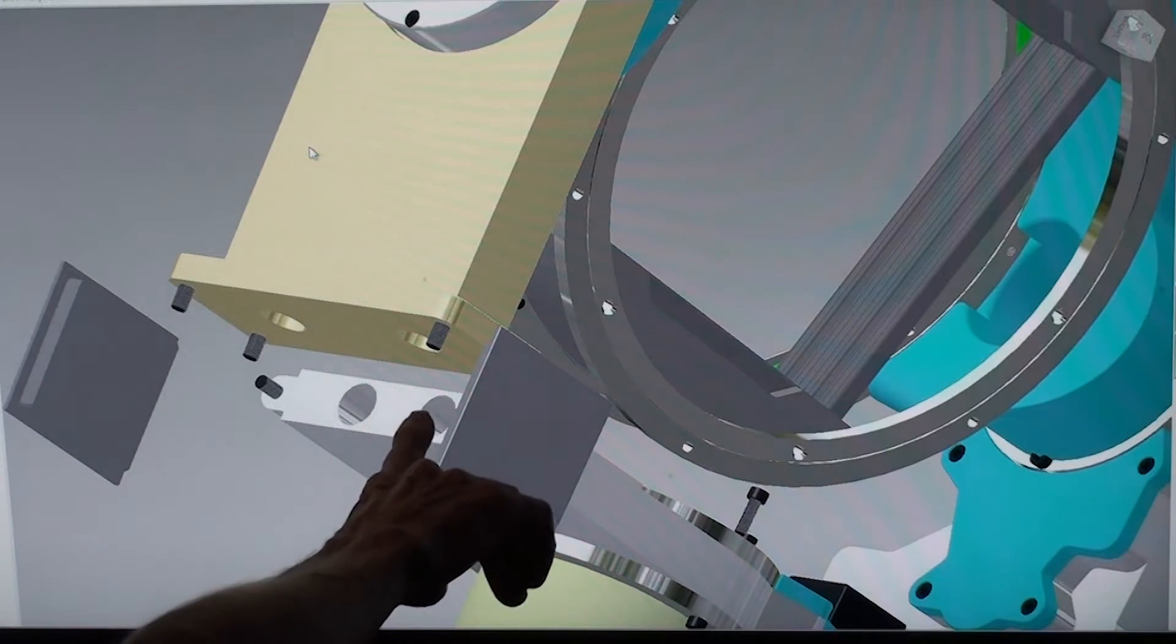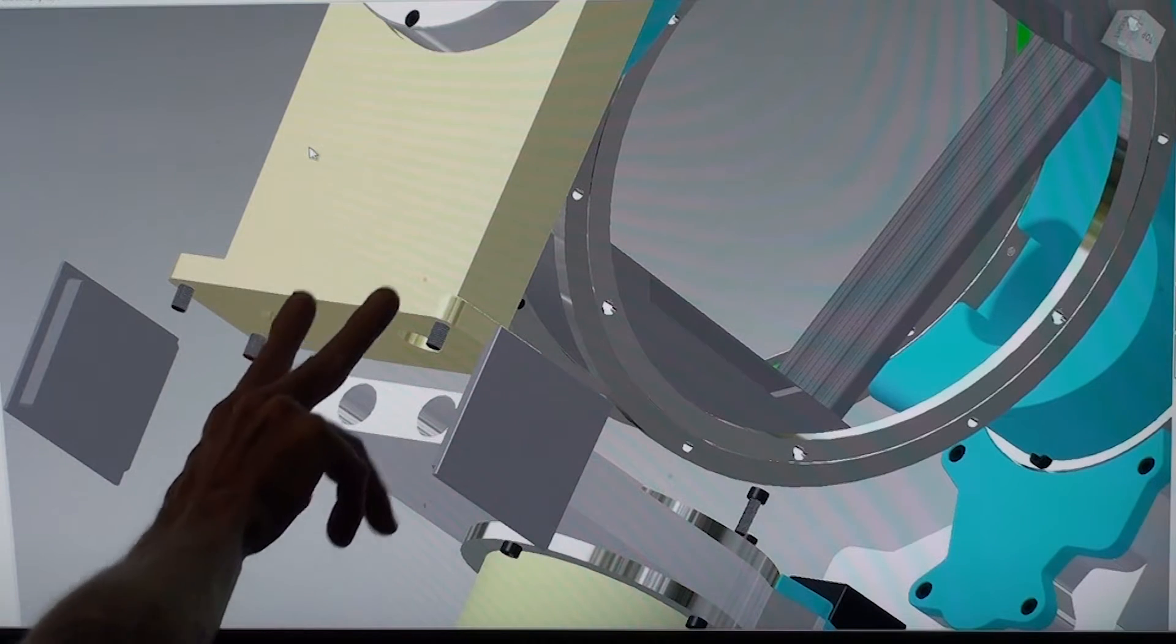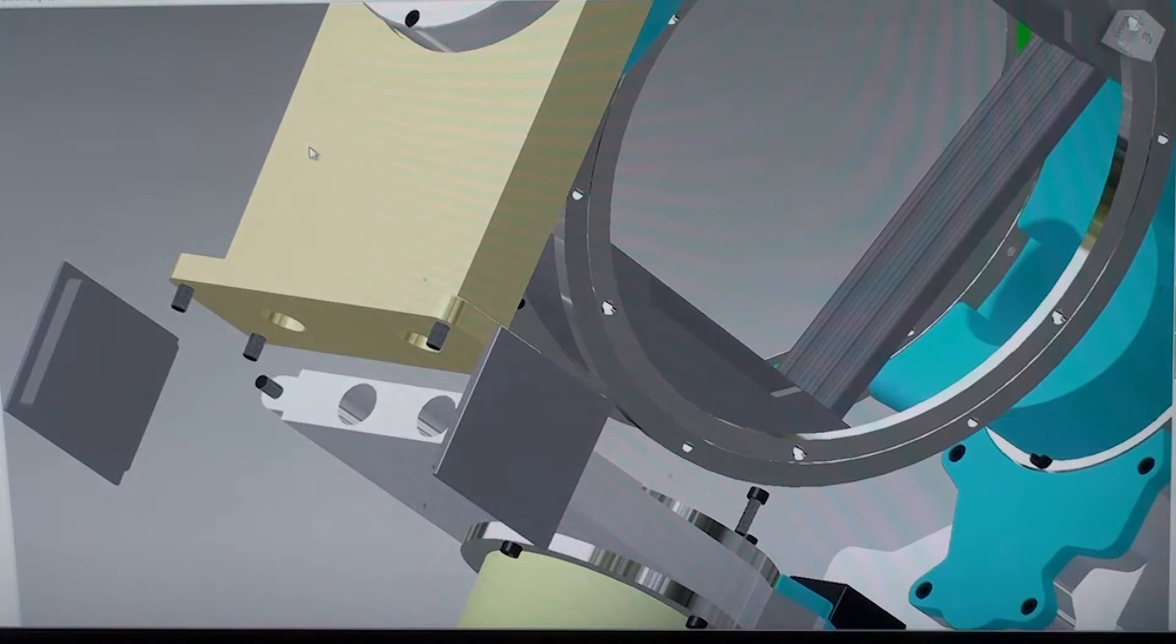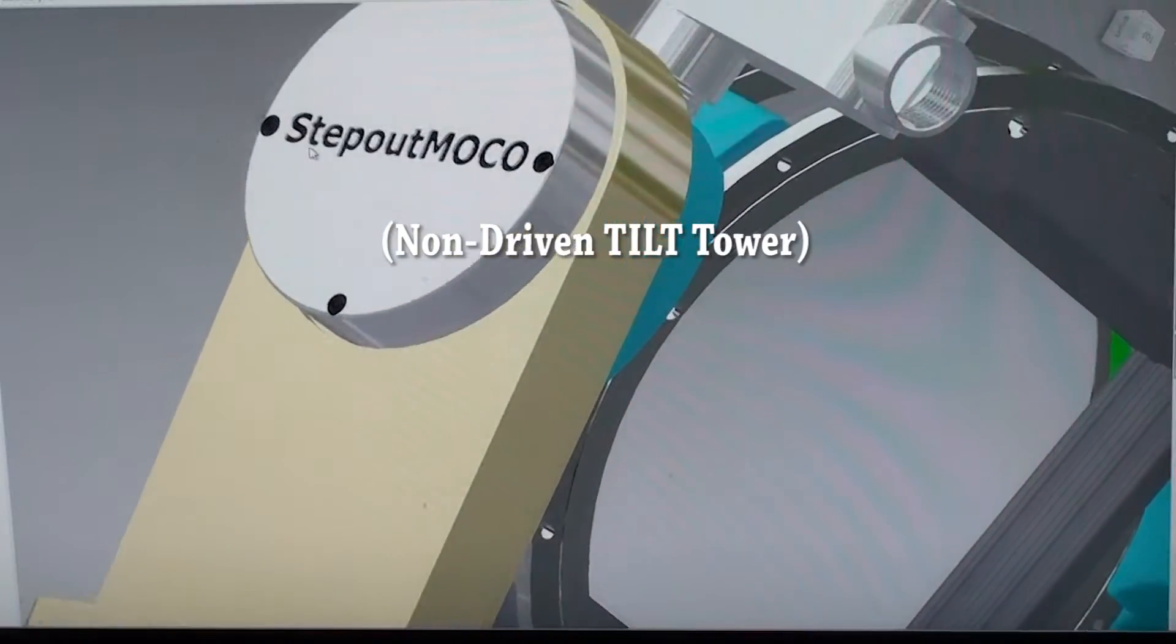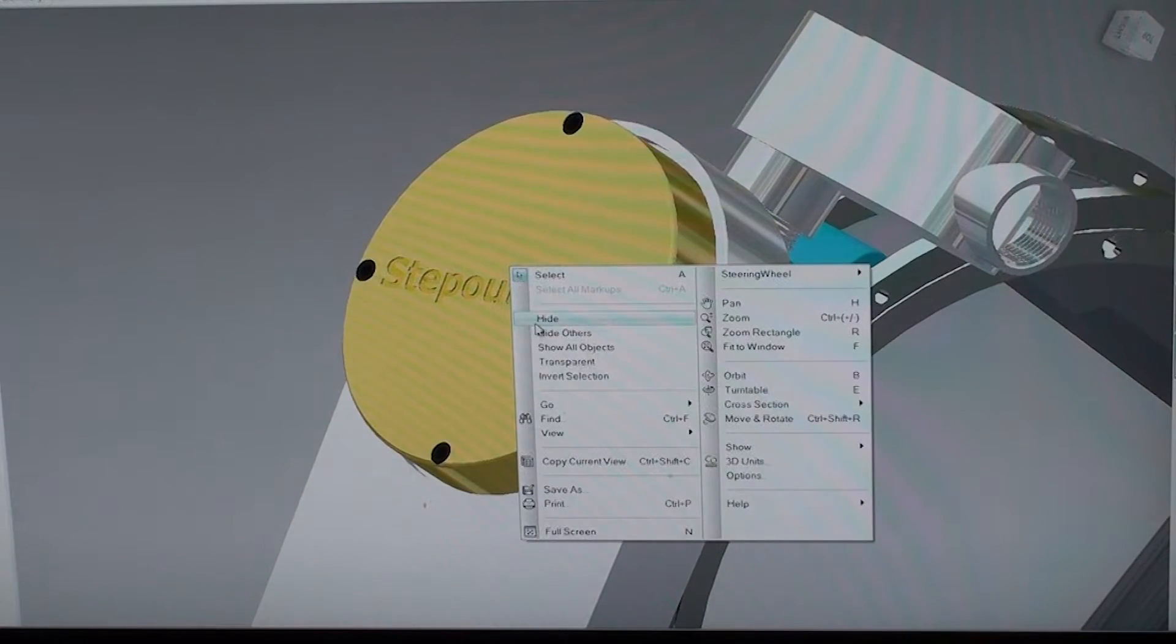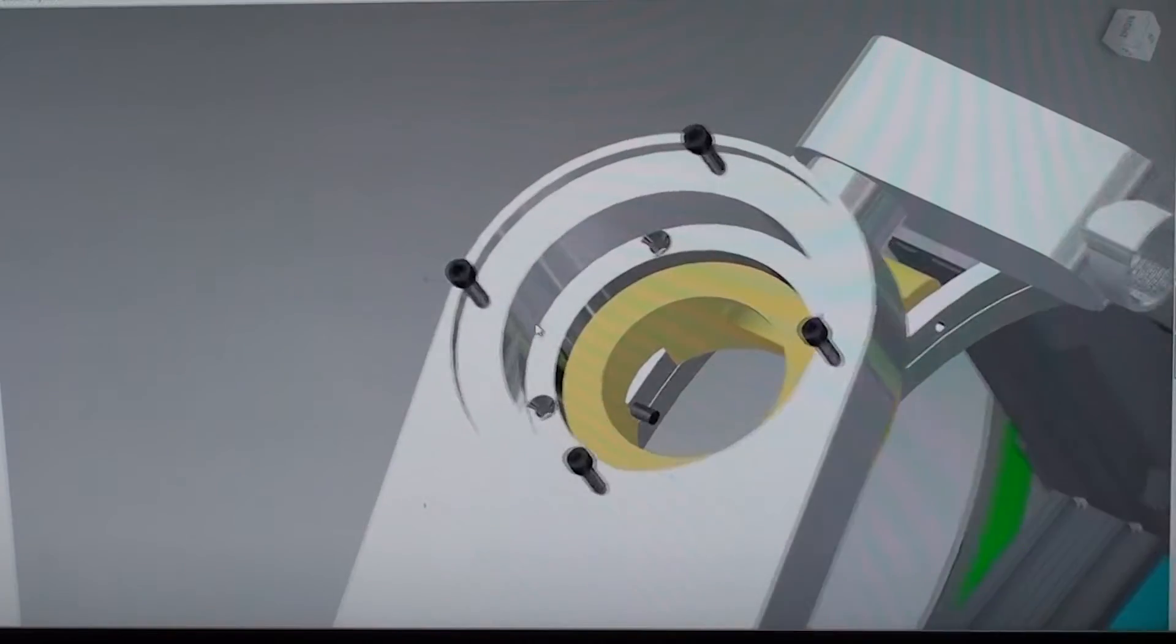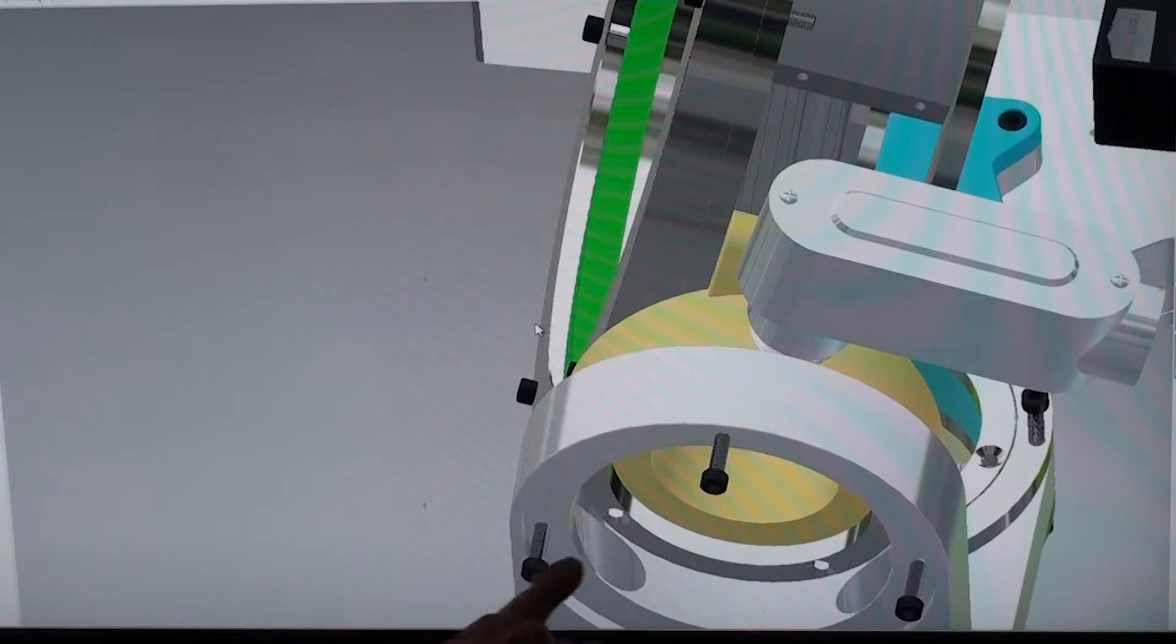Here you can see the wires come out inside that hollow extrusion and go up into the non-driven pan tower. Here are the two holes where the wires come out and can pass through the bearing.